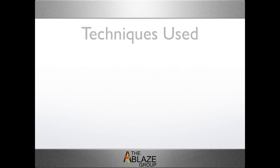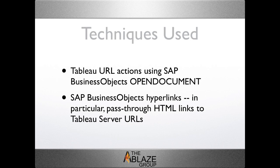A quick overview of the techniques used: Tableau uses URL actions calling SAP Business Objects OpenDoc calls with parameters. To get Business Objects to call Tableau, I used pass-through HTML — in one case doing hyperlinks to a separate document, bringing up the Tableau viz in a separate tab. The embedding used an iframe created within a Crystal Report, placing the Tableau document within the iframe, then refreshing the iframe with hyperlinks via pass-through HTML.